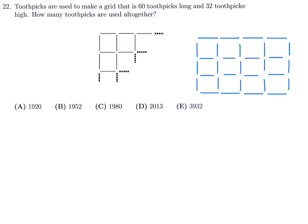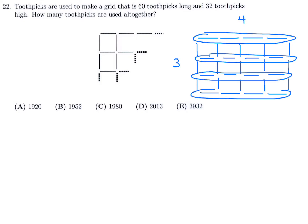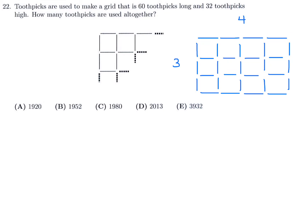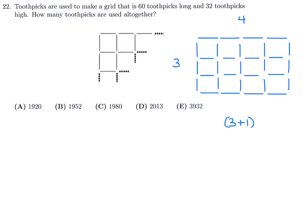If it's a four by three, how many toothpicks are there? I need a system instead of counting. This side is four and this is three. First, I want to count the horizontal toothpicks. How many rows are there? This side is three, but there are four rows — one more than that dimension. So three plus one is the number of rows, and in each row there are four toothpicks. Multiply: four times four is 16 horizontal toothpicks.